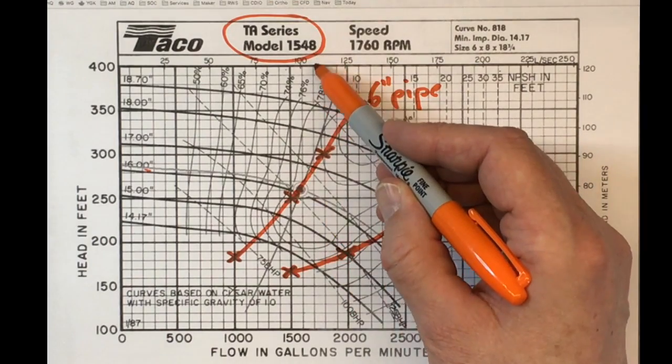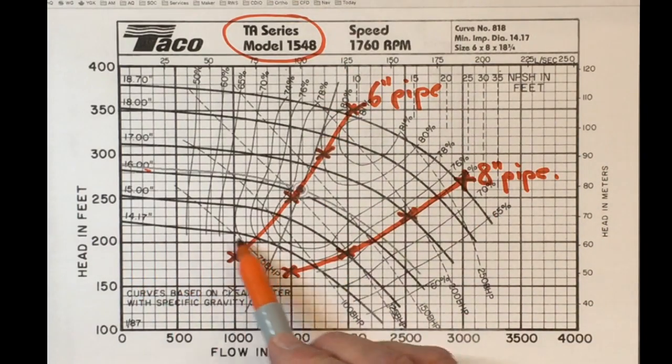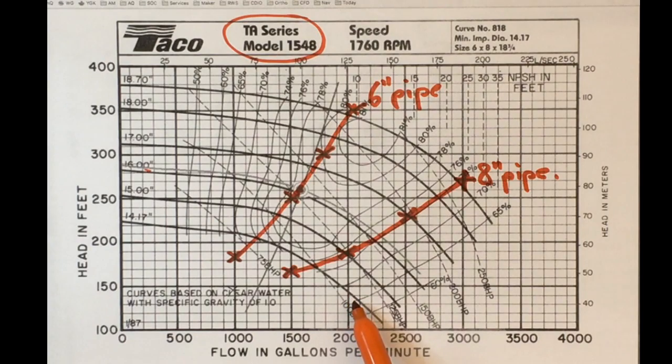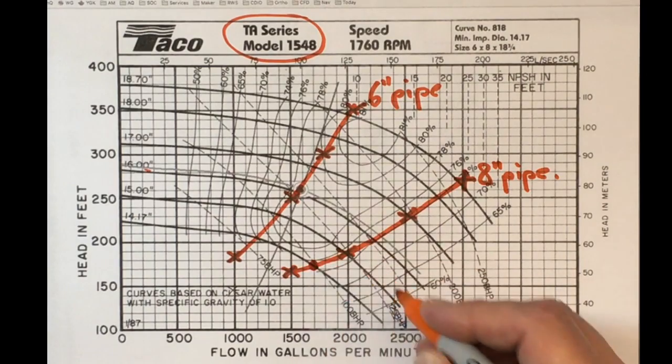I'd still be delivering more than the design flow rate if I just got the 14.17-inch impeller and installed it.